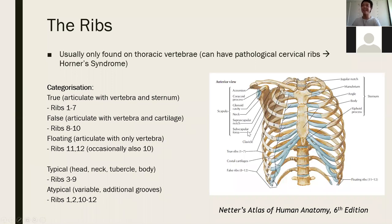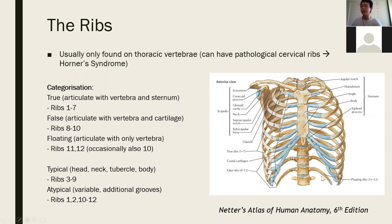A typical rib has a head, a neck, a tubercle, and a body. The head attaches onto the vertebral body. The tubercle is the next bit along that usually attaches to the transverse costal process. The body curves around, and the neck is the bit between the head and the tubercle. Atypical ribs are ribs 1, 2, 10, 11, and 12 — these often lack one or multiple of these features, and some have additional features, like ribs 1 and 2 which have grooves for structures to pass through them.